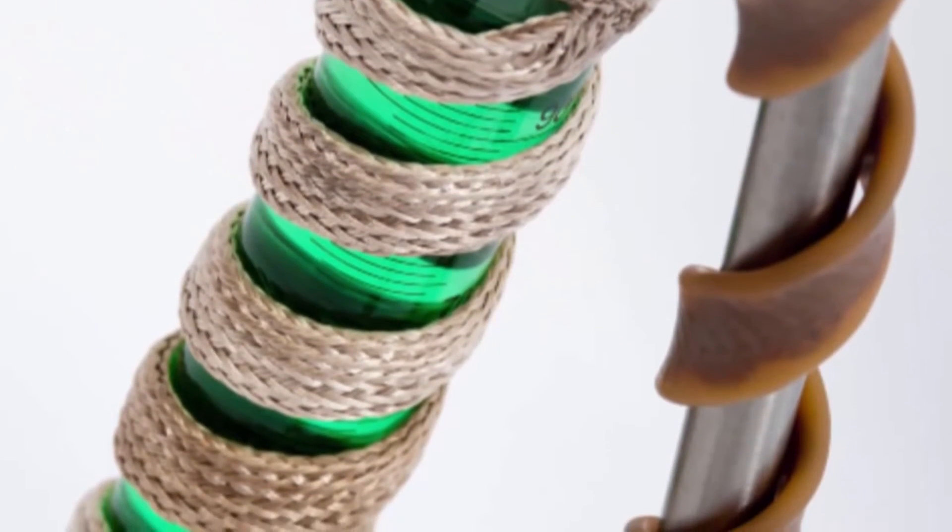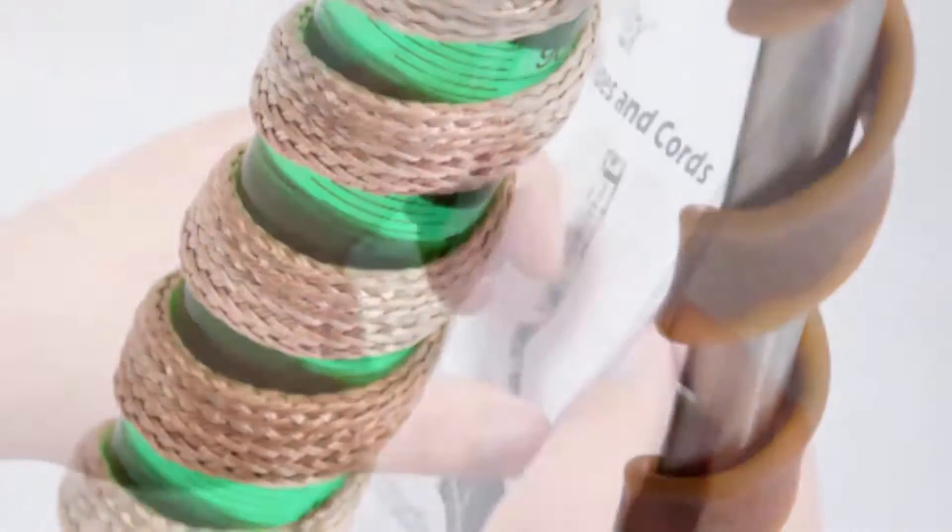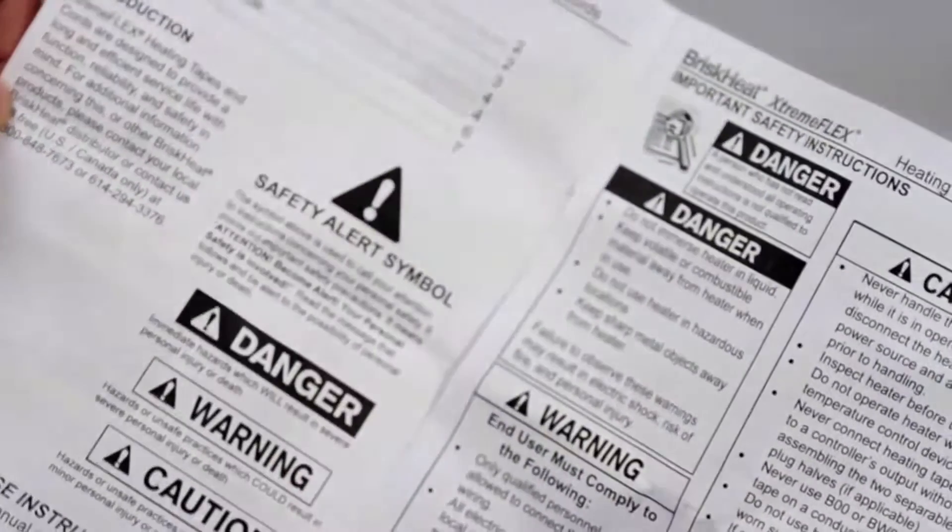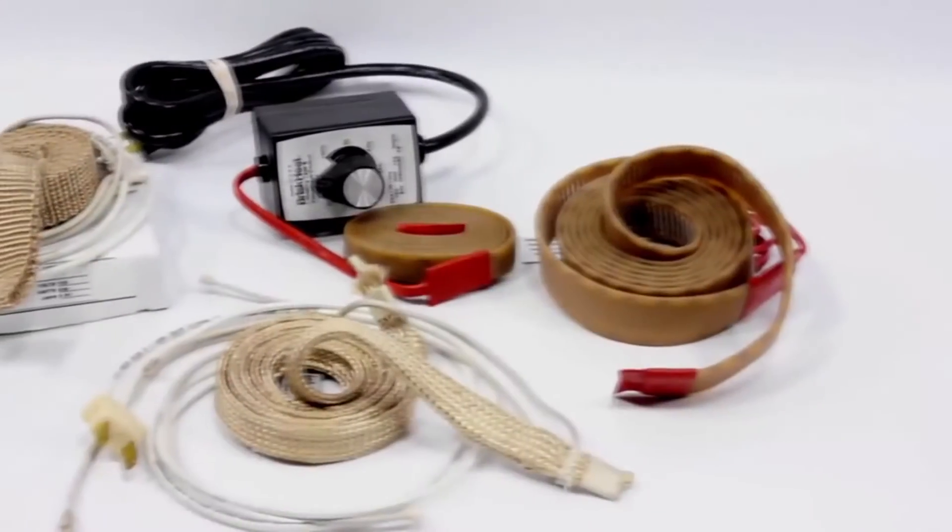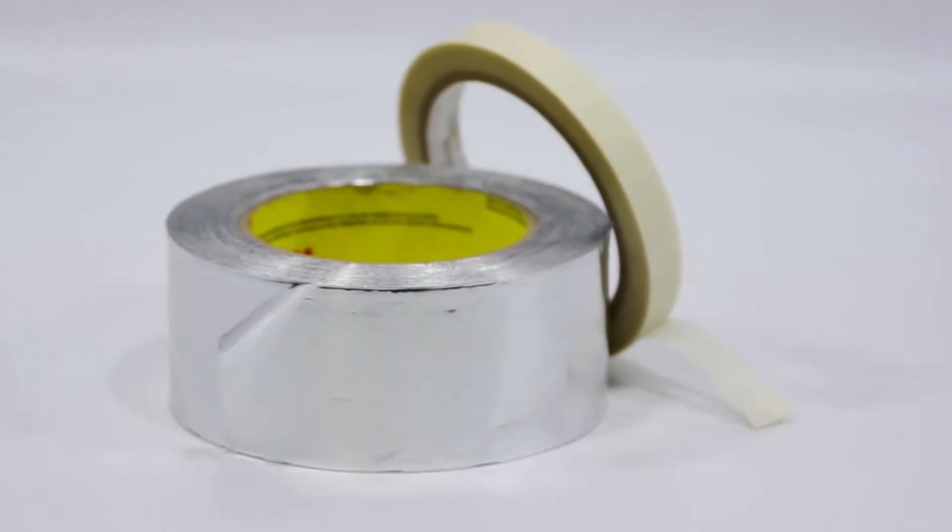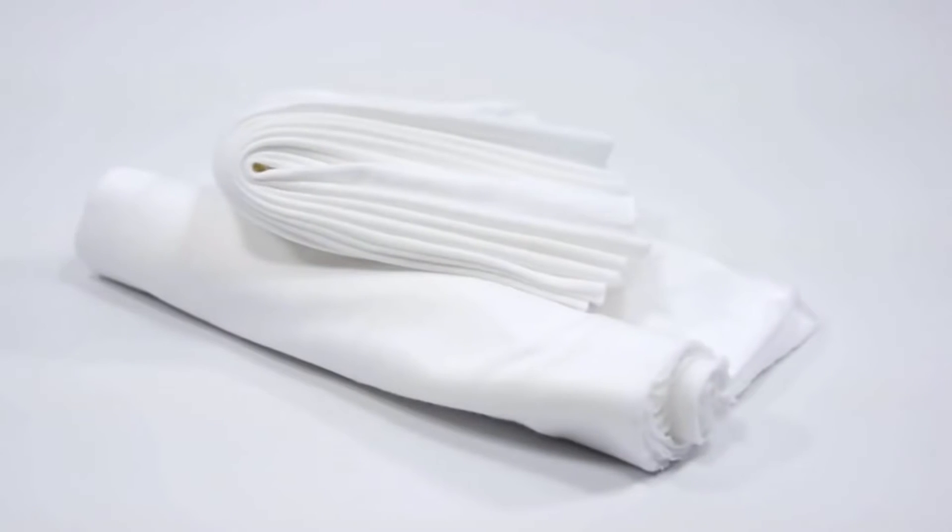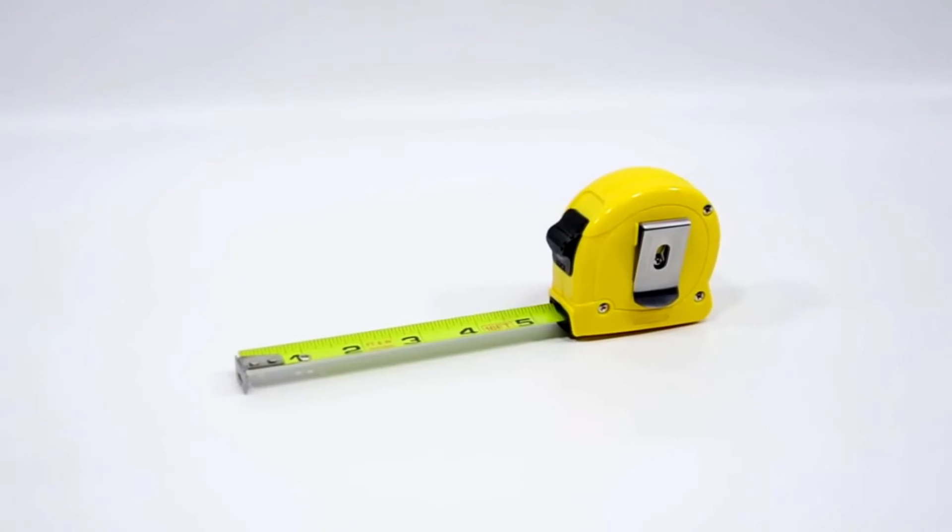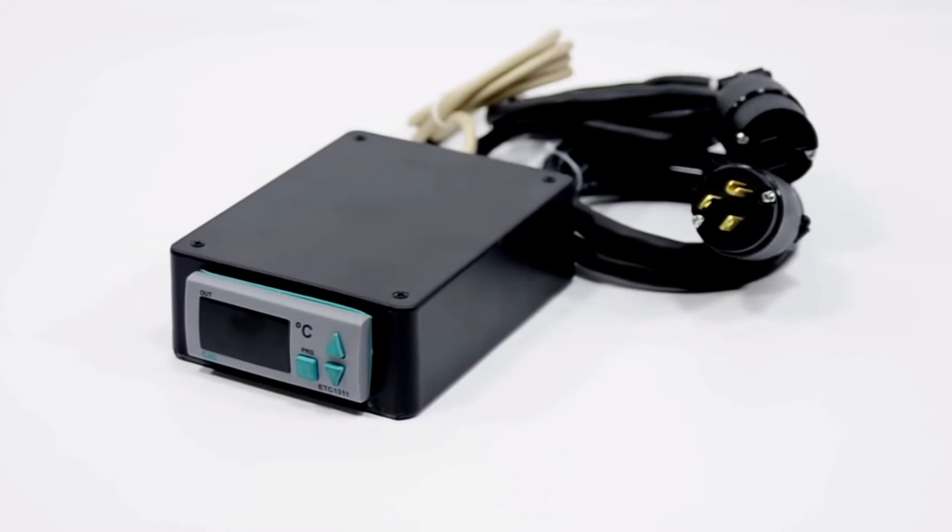Once you have decided on the correct heating tape for your application, here is a list of the things you will need for your project. Your selected heating tape, pressure sensitive and heat resistant tape such as fiberglass or aluminum, cloth rags, a tape measure, gloves, safety glasses and a temperature controlling device.